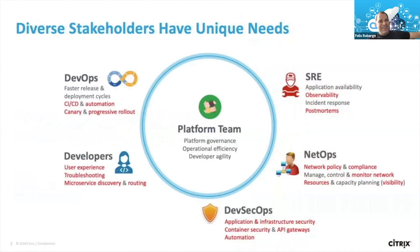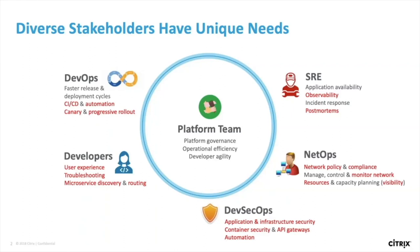We quickly realized through meetings with customers that Kubernetes environments have multiple stakeholders within the organization, each with unique needs. The platform team needs developer agility and platform governance. DevOps needs CI/CD and automation, plus progressive rollout. Developers need user experience, microservices discovery, and routing. DevSecOps needs security requirements and API gateway. NetOps needs network policies and monitoring, and site reliability engineers need observability and post-mortem reporting.